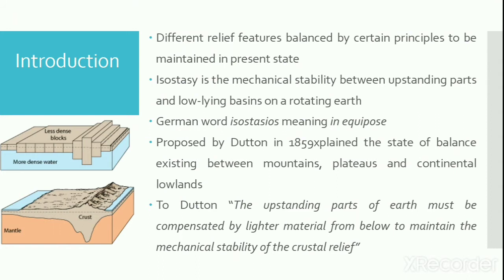Isostasy is the mechanical stability between the upstanding parts and the low-lying basins on a rotating earth. The word isostasy has derived from the word isostasyos which means in equal position. This concept was proposed by American geologist Dutton in the year 1859.